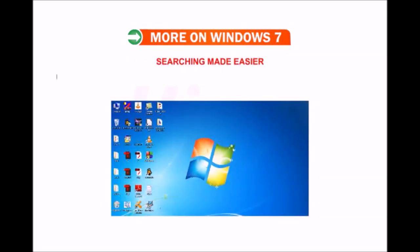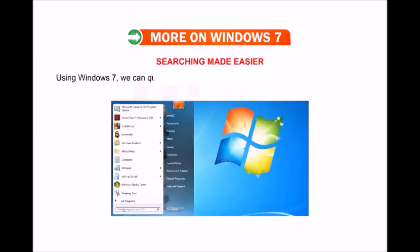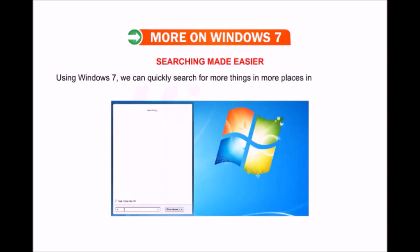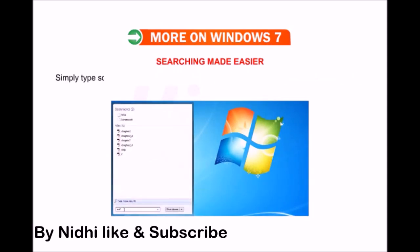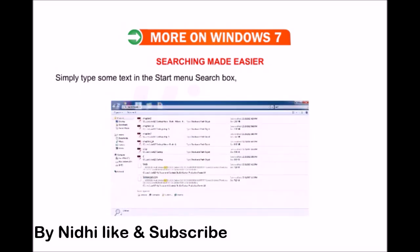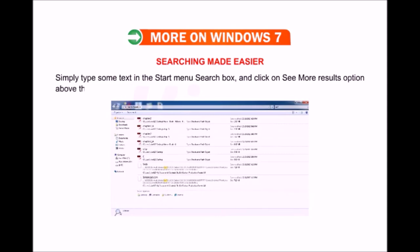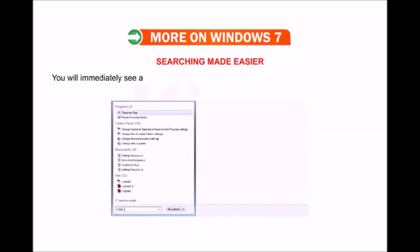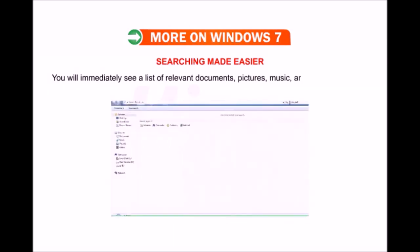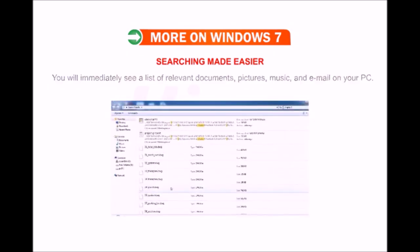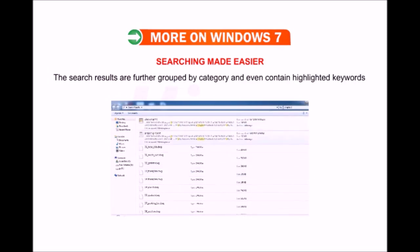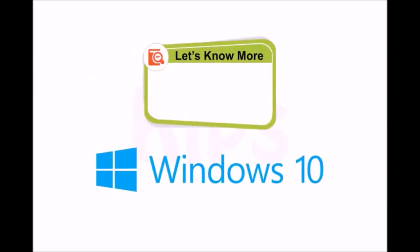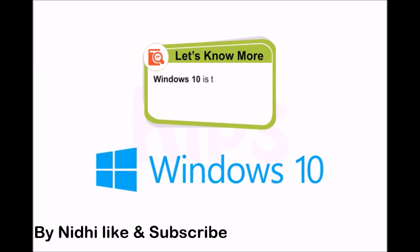Searching made easier: Using Windows 7, we can quickly search for more things in more places on our computer. Simply type some text in the Start menu search box and click 'See more results.' You will immediately see a list of relevant documents, pictures, music, and email on your PC. The search results are further grouped by category and even contain highlighted keywords and text snippets to make them easier to scan.